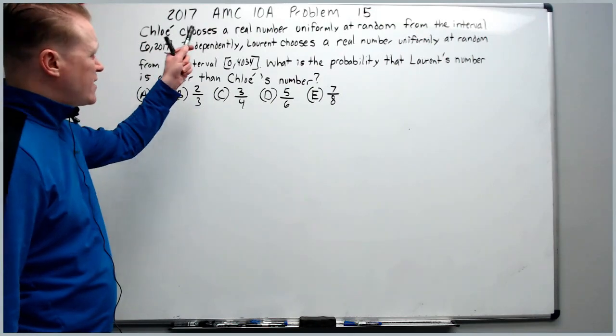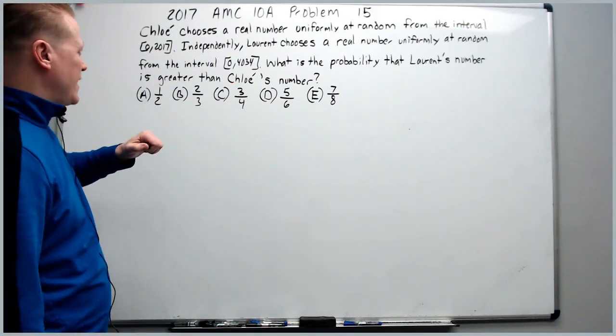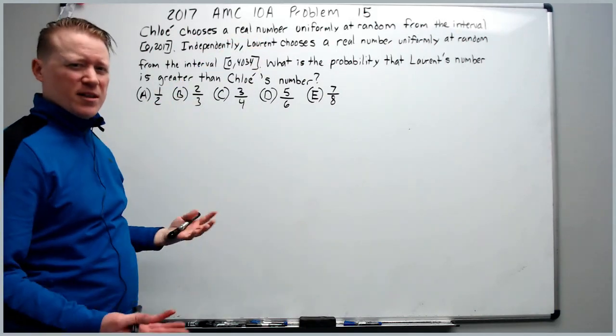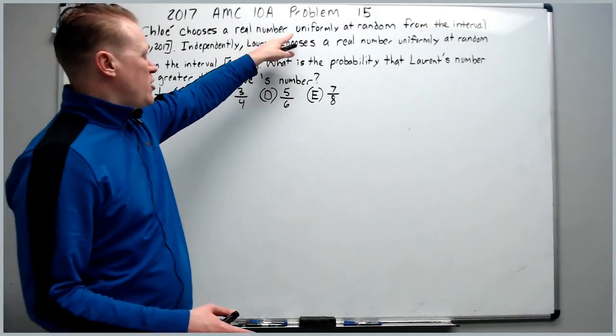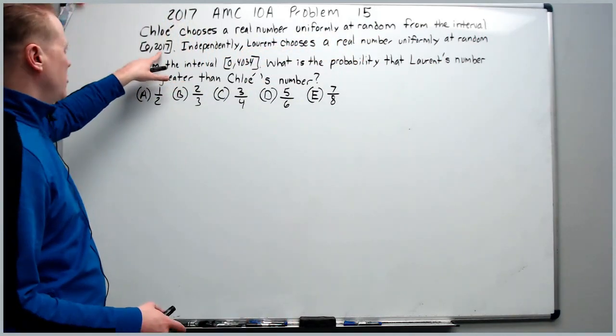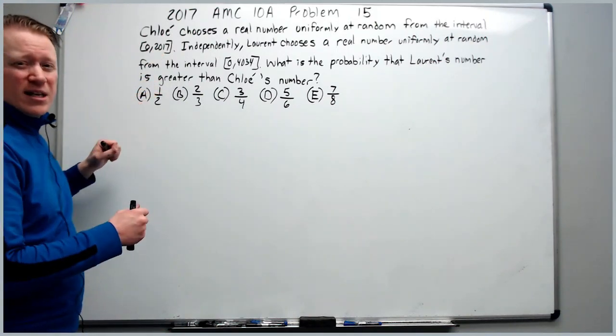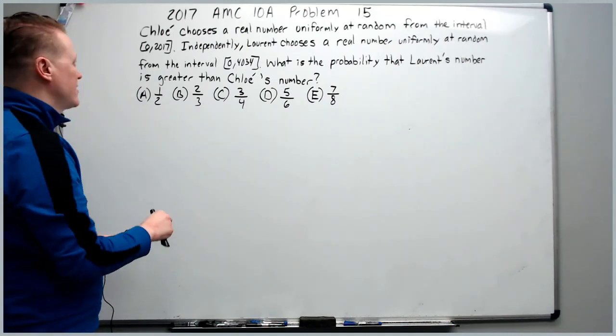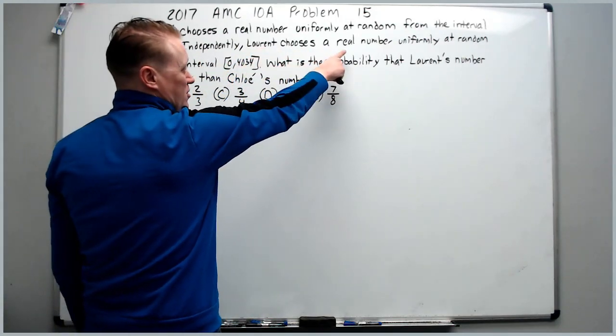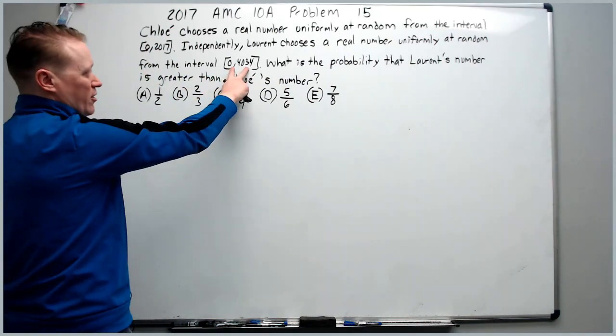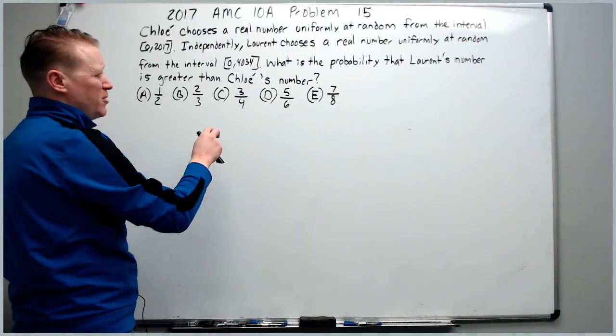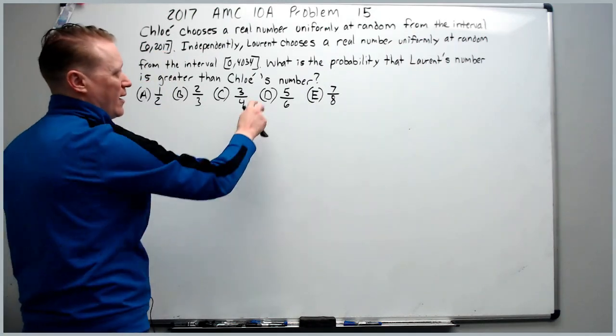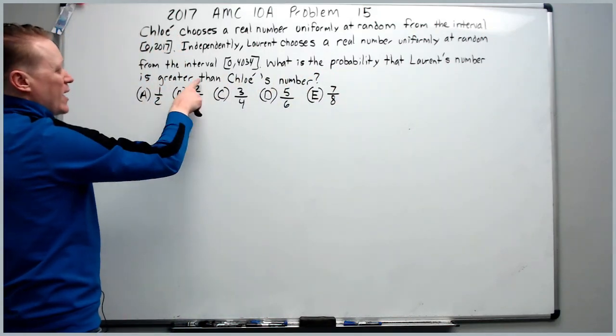The last problem of this video: the 2017 AMC 10A problem number 15. Chloe chooses a real number uniformly—when you read things like real numbers, start thinking this is rational, irrational, everything, decimals—uniformly at random from the interval [0, 2017] inclusive. If you don't understand interval notation, try to find a video on it. The brackets mean inclusive. Independently, Laurent chooses a real number uniformly at random from the interval [0, 4034] inclusive. Right now, your brain should be registering that this number is exactly twice this number.